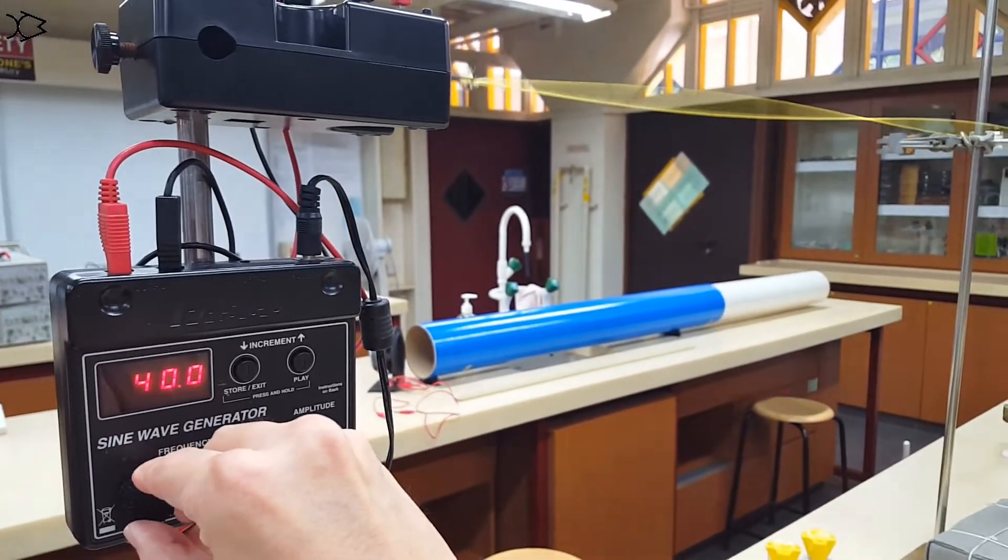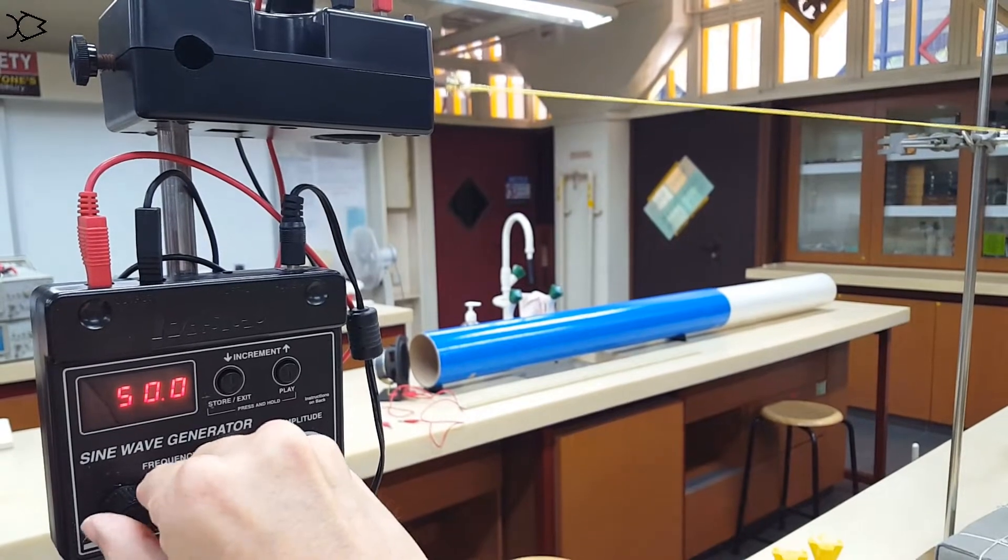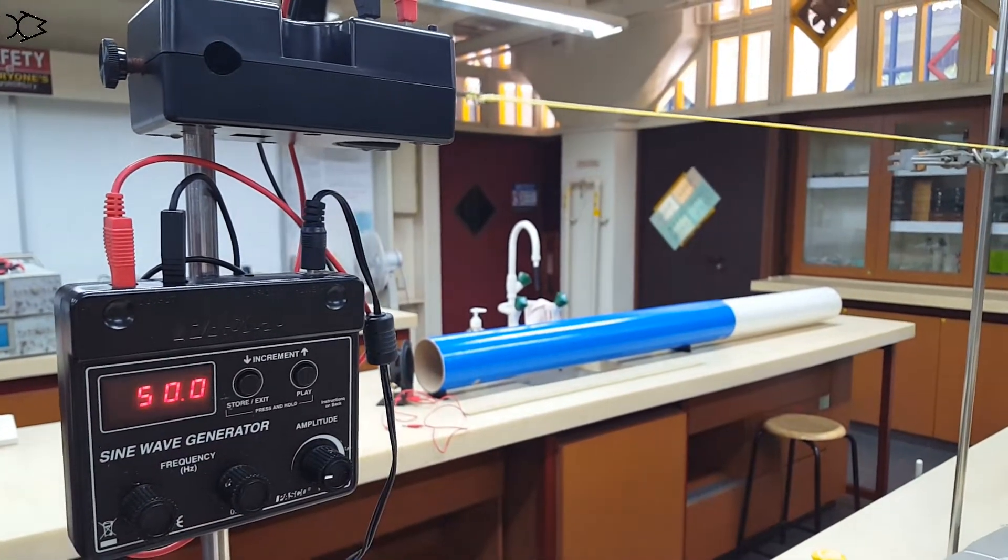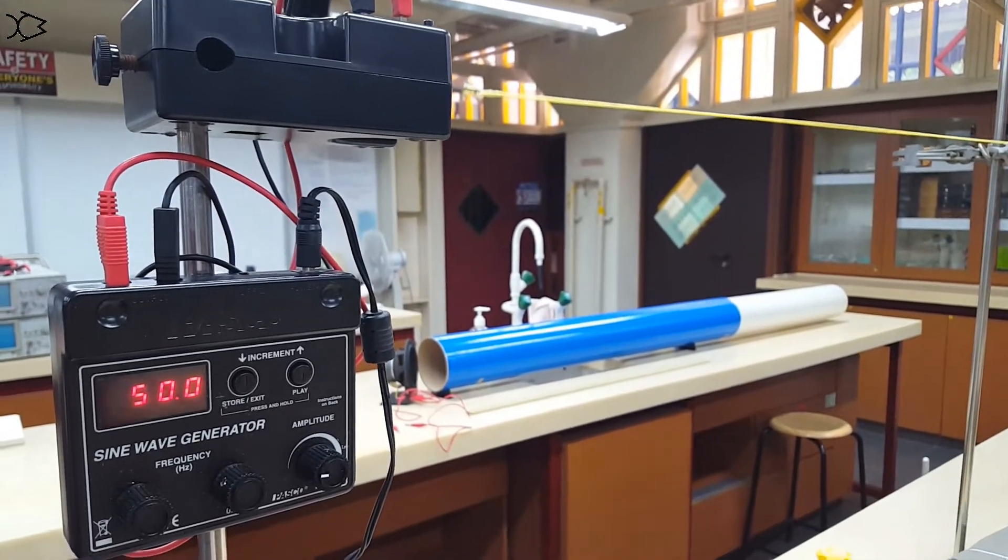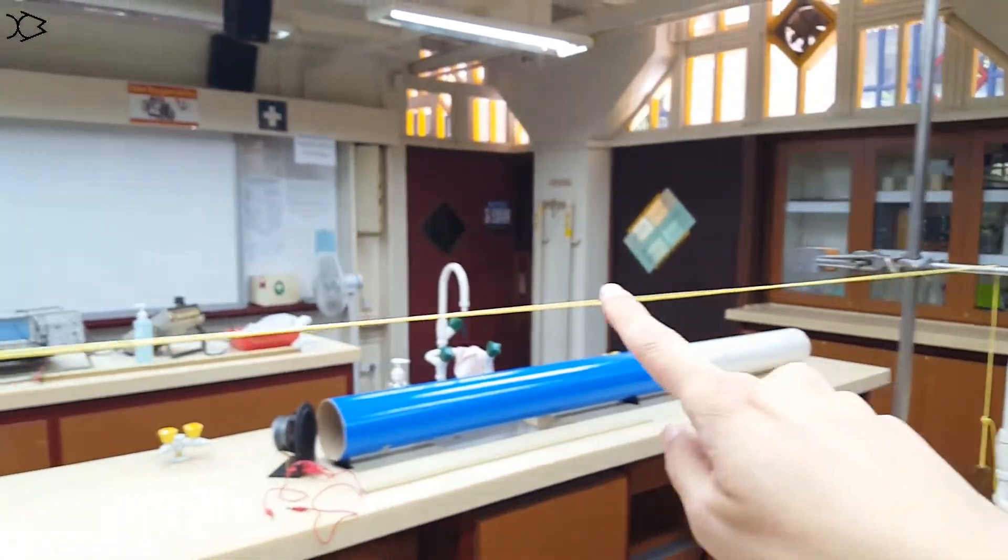If I increase the frequency further, for example like 50 hertz, let's say about here. So this is not a resonant frequency. We have all those mini standing waves that are going to superpose destructively, so giving you nothing significant along the string, right? See? Not much of an amplitude here.